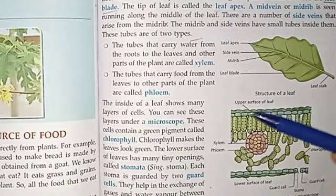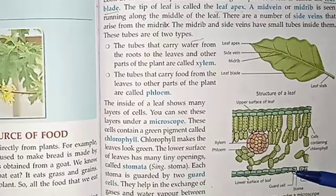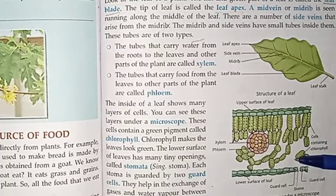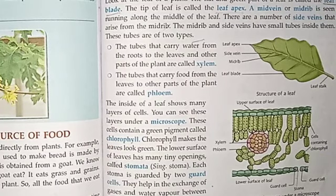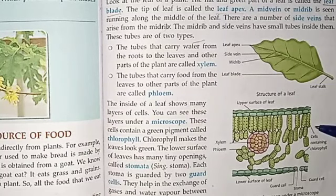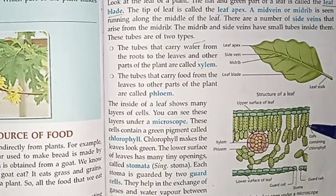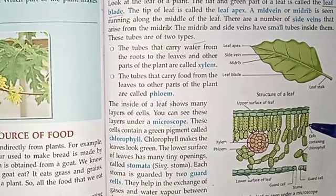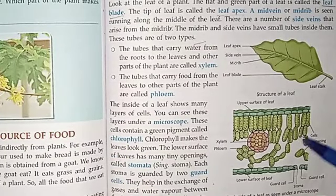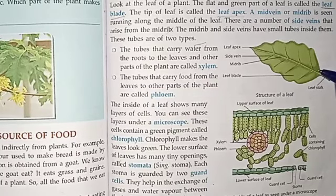Inside a leaf, many layers of cells are found. The cells have a green color. This green color comes from a substance called chlorophyll. The green color of the leaf is due to chlorophyll.